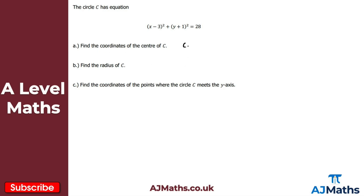For the center, we just take a look at this form here. We can see that the x-coordinate will be positive 3 — it's always the opposite sign, so x minus 3 gives x-coordinate 3. For the y-coordinate, this would be minus 1. So that gives the coordinates of the center of circle C as (3, -1).